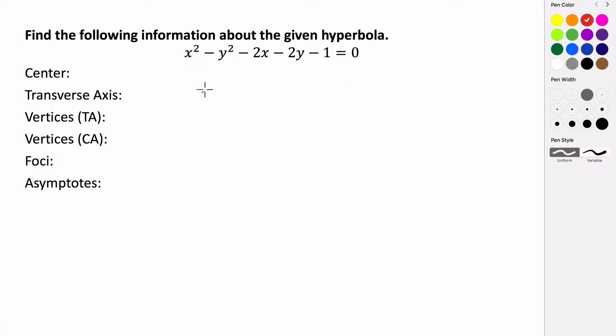So grouping all the x's, we have x squared minus 2x. And then we have minus y squared minus 2y. And then to complete the square, we actually want this negative 1 to be on the right side. So we're going to add 1 to both sides, so equals 1.